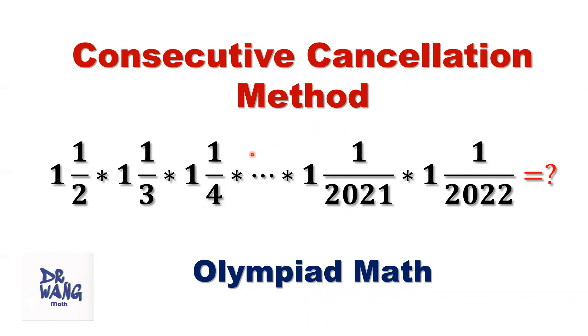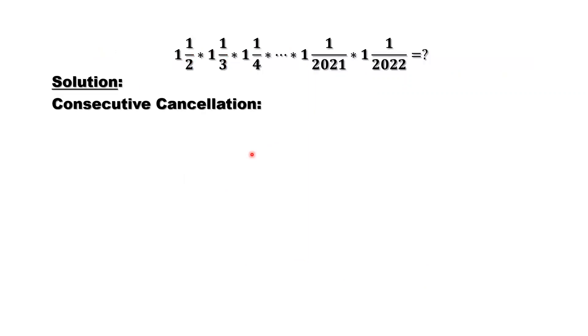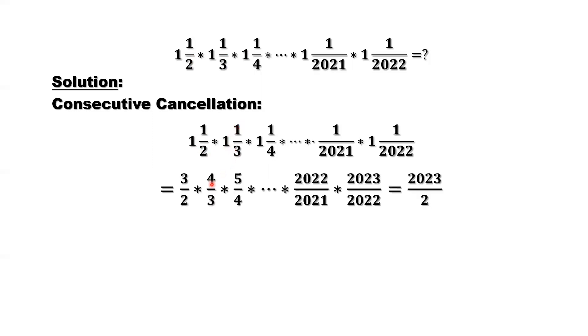So here, what we can do, what we can try, is this. Rewrite each term. Convert each term into fraction. Right now, all numbers are mixed numbers. How to convert those items into fraction? 1 times 2 add to the numerator. 2 plus 1 should be 3. That's the first term. That's 3 over 2. Second one is 1 times 3 add to the top. That's 4, 4 over 3. So the third term should be 5 over 4, then 6 over 5. The last two, you can see this one should be 2022 over 2021 times 2023 over 2022.